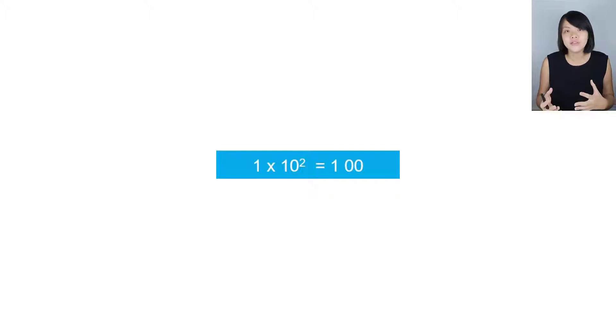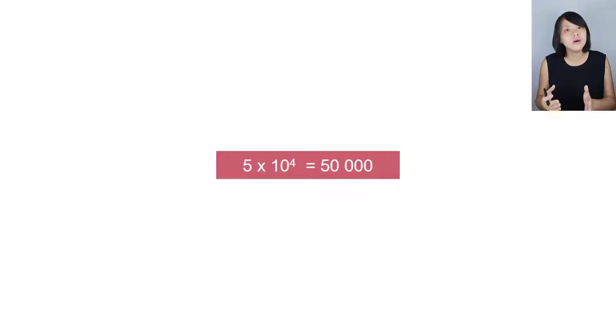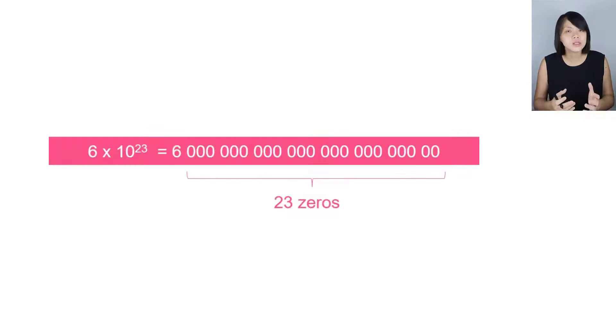Like for example, we can write 100 in standard form. It will be 1 times 10 power 2. If you want to write a value of 2000, it will be 2 times 10 power 3. If we are dealing with 50,000, then we can write it as 5 times 10 power 4. So 6 times 10 power 23 simply means that it's 6 followed by 23 zeros. So you can see that it is a very huge number.